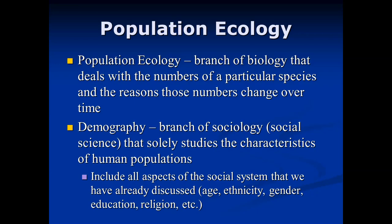When we talk about demographics, we're talking about things connected to the three spheres of sustainability we discussed on the first day of class: the environment, the economy, and the social system. The social system includes all of these demographic features: age, ethnicity, income, religion, political affiliation, and sexual orientation — all rolled up into demographics.